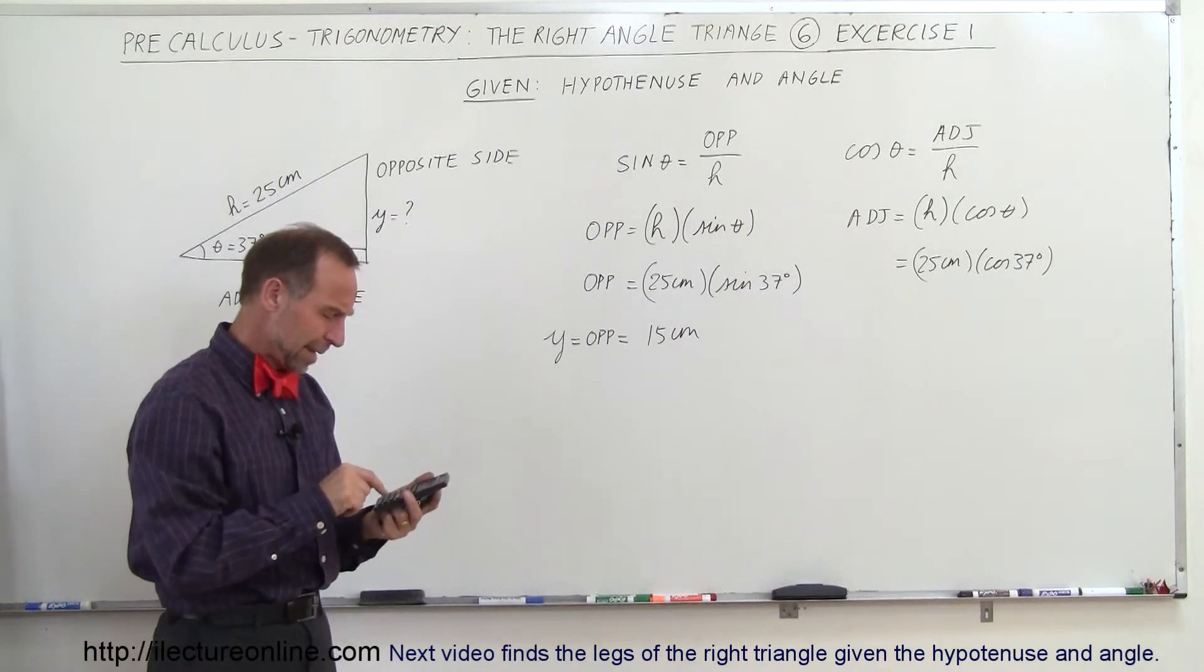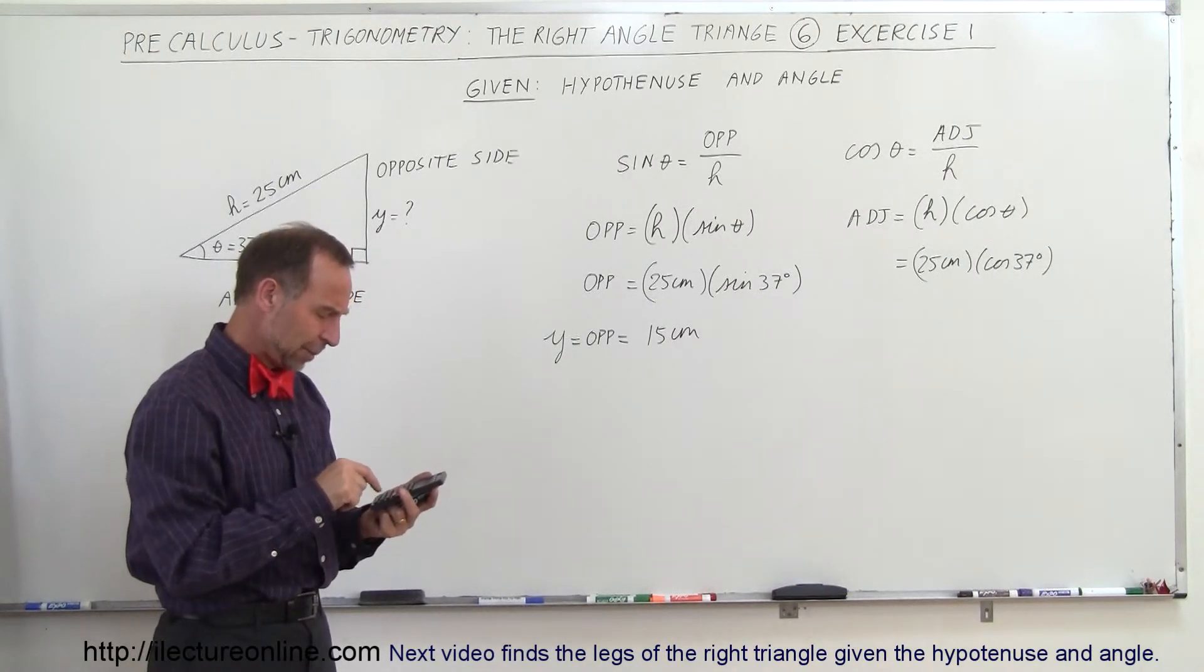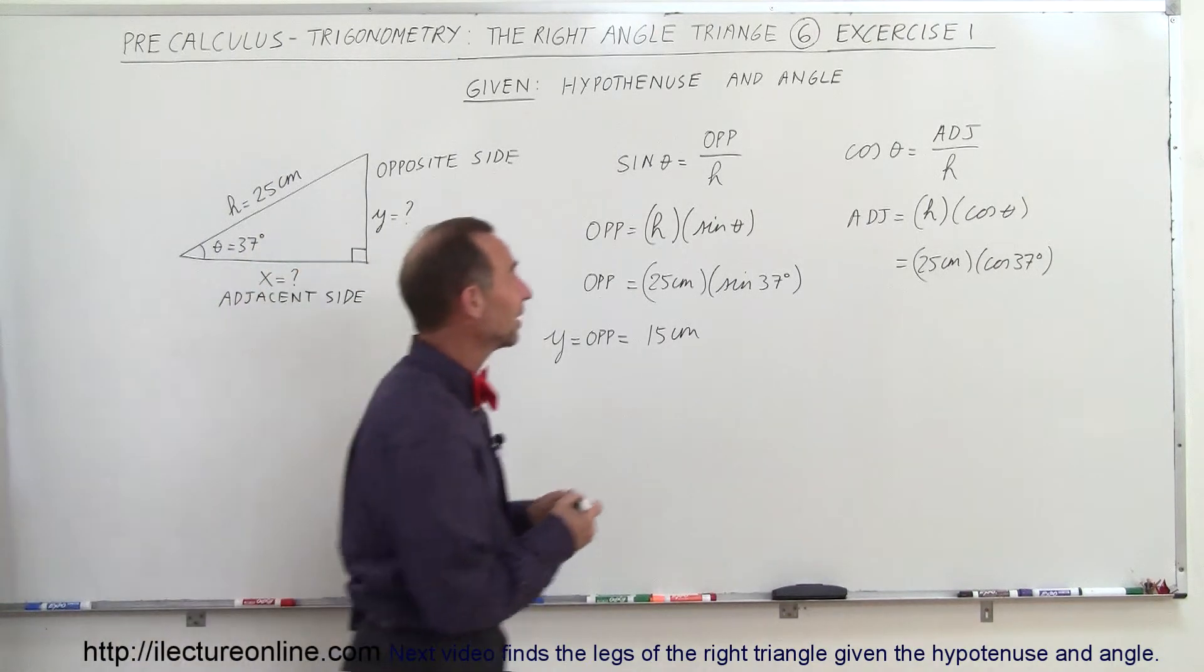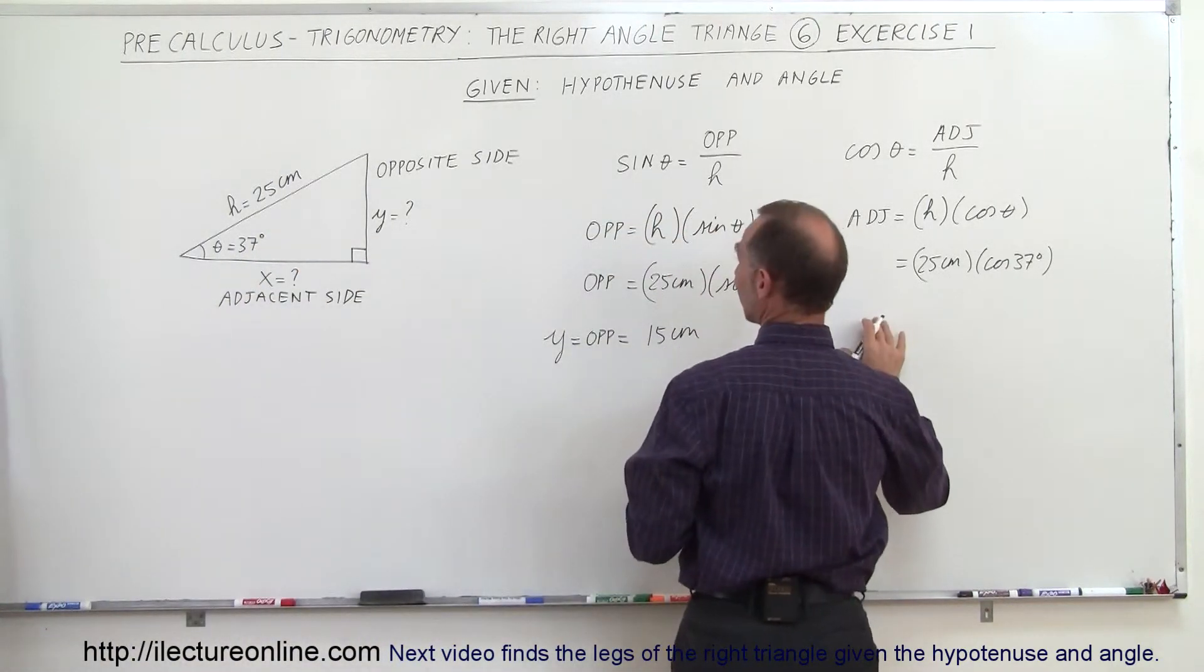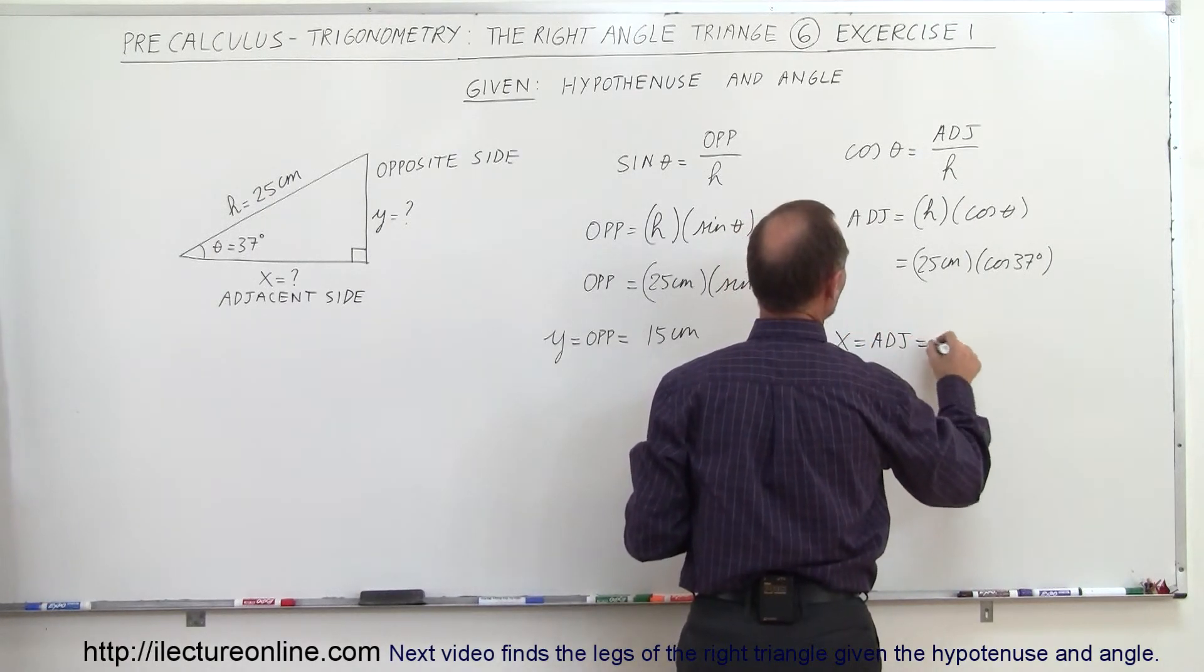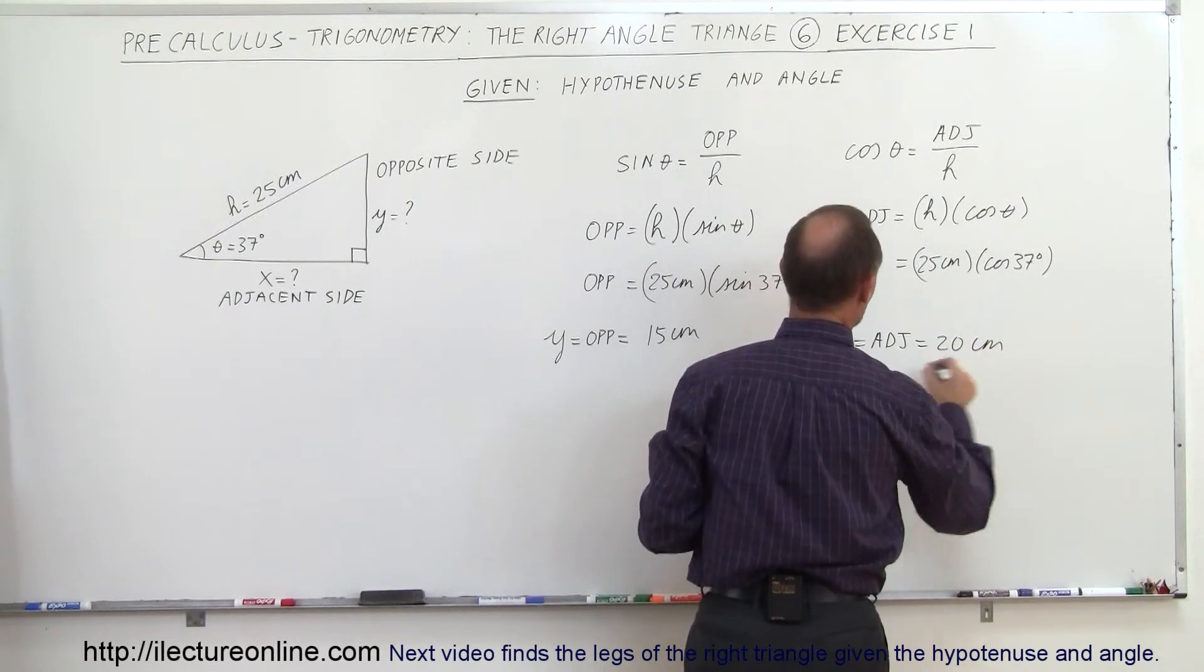I multiply those two together and see what we get in this case. I take 37, and I take the cosine of that, and multiply it times 25, and I get close enough to 20 centimeters. So in this case, the adjacent side is X, so X, which is equal to the adjacent side, which is equal to 20 centimeters.